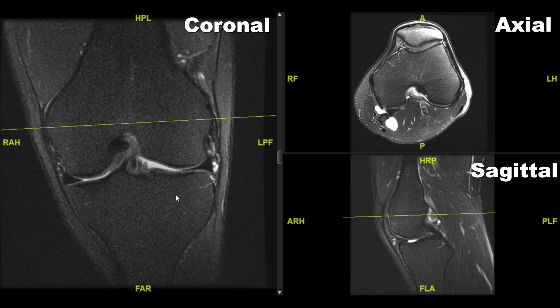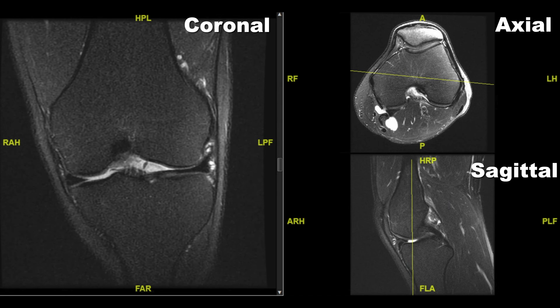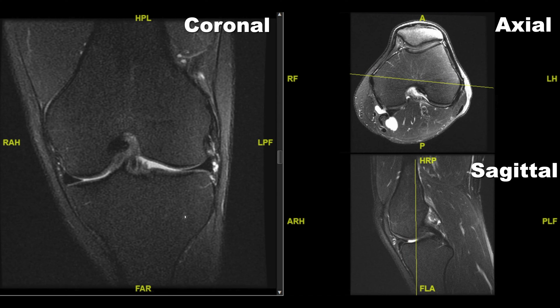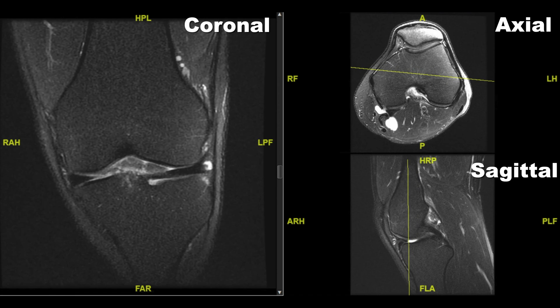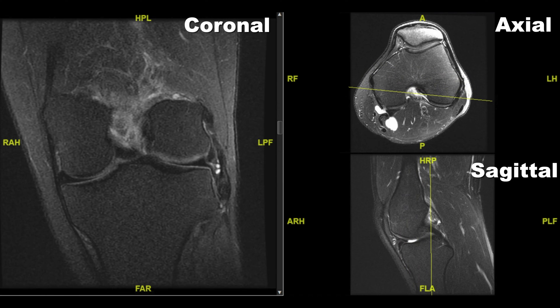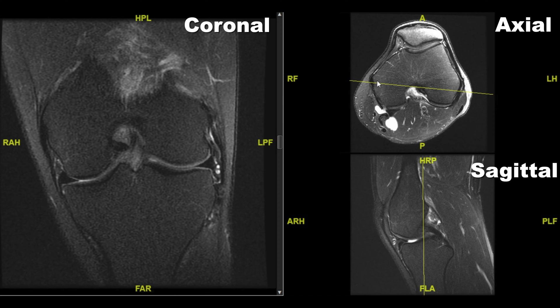Let's return back to this coronal over here, the big window on the left. As I start scrolling through this image, you'll notice these yellow lines moving through each one of the other images. These are called localizer lines, and they help us understand where we are in each image in reference to the other perspectives on the MRI scan.